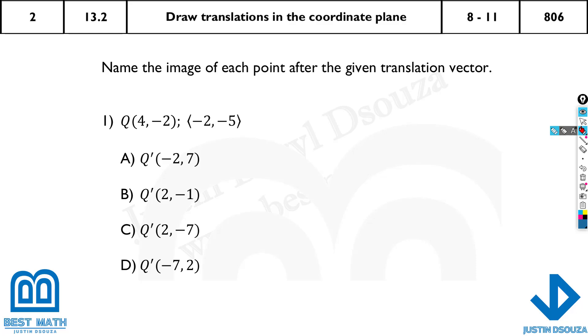So what we do is very simple. You just add the translation vector to the given point. Now if you add, what is the translation vector? -2 to 4, that is the x-coordinate, and y-coordinate is -2 plus -5.